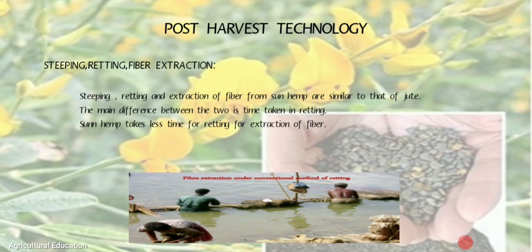Post Harvest Technology — Steeping, Retting, and Fiber Extraction: Steeping, retting, and fiber extraction from sunhemp are similar to that of jute. The main difference between the two is the time taken in retting. Sunhemp takes less time for retting than jute.